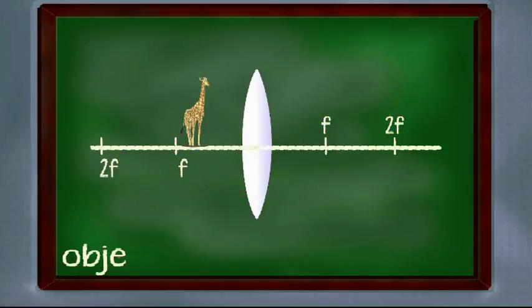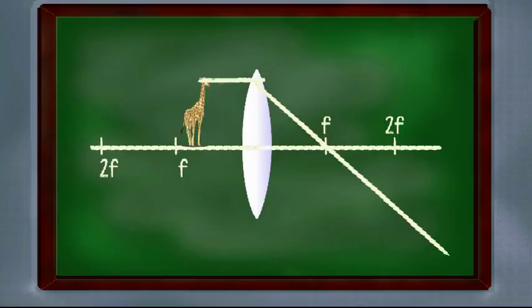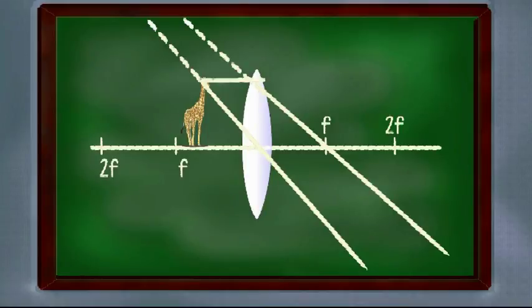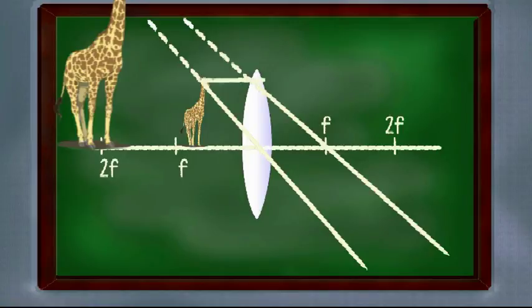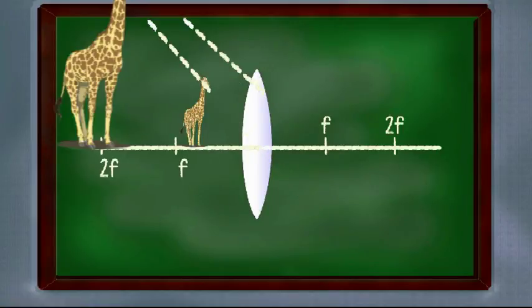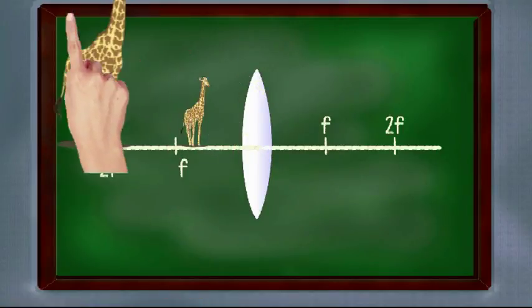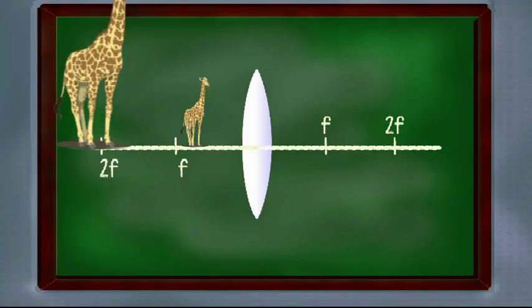Case 6, when object is between f and lens. Now in this case, the light rays will not converge but they will diverge. So when light rays will diverge, we have to trace them back to find the image. So in this case, image is not real. It is virtual and the image forms behind the object and it is stretched out and it is straight, not inverted.